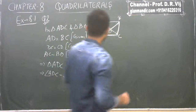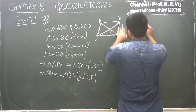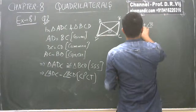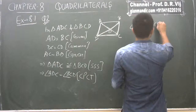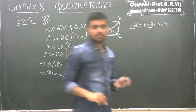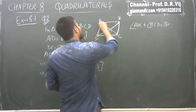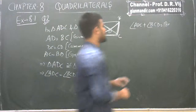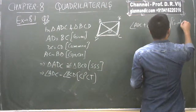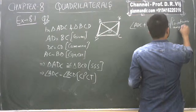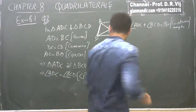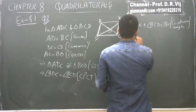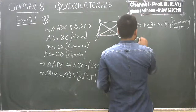Now if we see, angle ADC plus angle BCD equals 180 degrees by the property of co-interior angles — if there are two parallel lines and a transversal passing through them, the co-interior angles add up to 180 degrees. Since we know angle ADC equals angle BCD by CPCT, substituting gives twice of angle ADC equals 180 degrees.